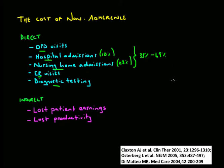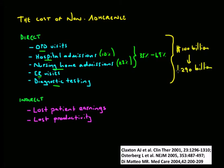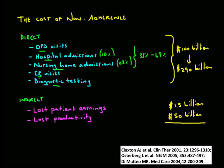What does this mean in financial terms? Looking at direct costs, the low estimate has been about 100 billion US dollars per year, and the high estimate goes up to 290 billion US dollars per year. Money lost in terms of lost patient earnings — one of the indirect costs — is estimated at about 1.5 billion US dollars per year, and money lost in terms of lost productivity is about 50 billion. Put together, we're talking about somewhere between 151 to 341 billion US dollars per year in economic costs and financial losses.